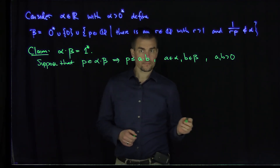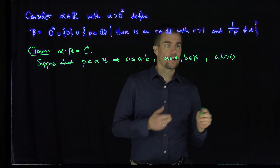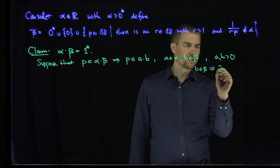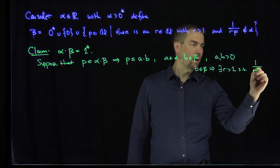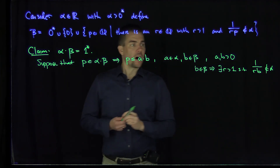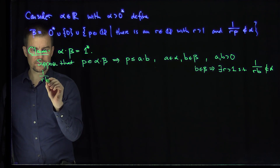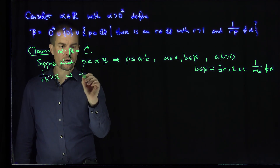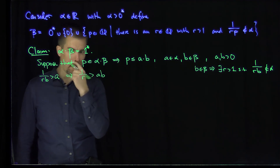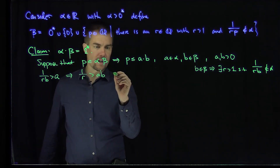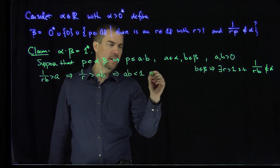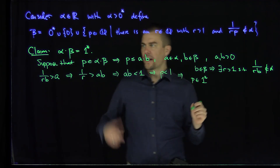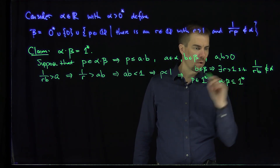We want to show p is in 1*. Since b is in beta, there exists r > 1 such that (1/r)·b is not in alpha. This means (1/r)·b is bigger than anything in alpha, hence bigger than a, which implies 1/r > a·b. Since r > 1, we have 1/r < 1, so a·b < 1, meaning p < 1, so p is in 1*. Therefore alpha·beta ⊆ 1*.